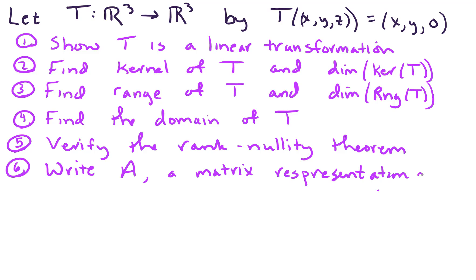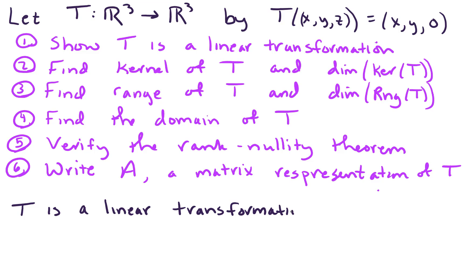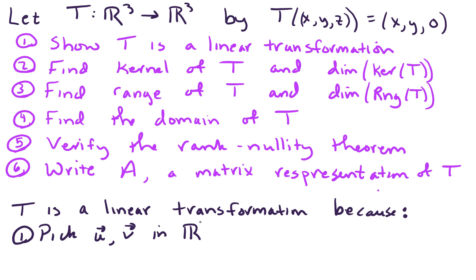A lot of these things are connected, and we will identify some of those as we move forward with our example. So first, let's verify that we have a linear transformation. T is a linear transformation because two things hold. The first thing we need to verify is the addition property. If we pick any vectors u and v in R3, what we need to show is that T of u plus T of v equals T of u plus v.